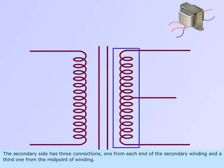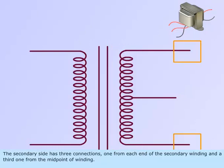The secondary side has three connections: one from each end of the secondary winding and a third one from the midpoint of the winding.